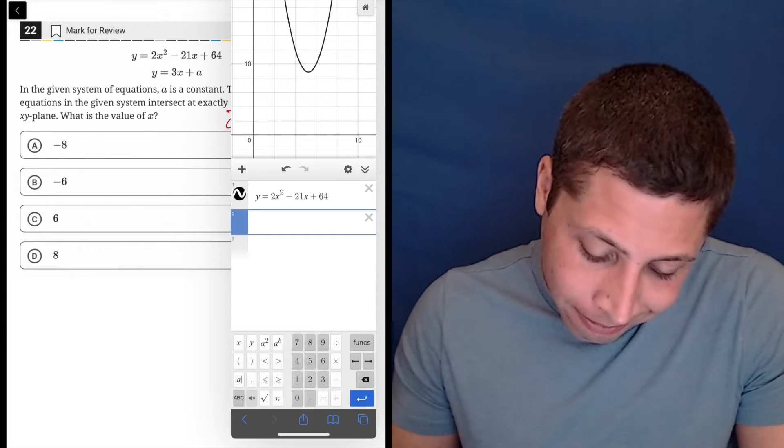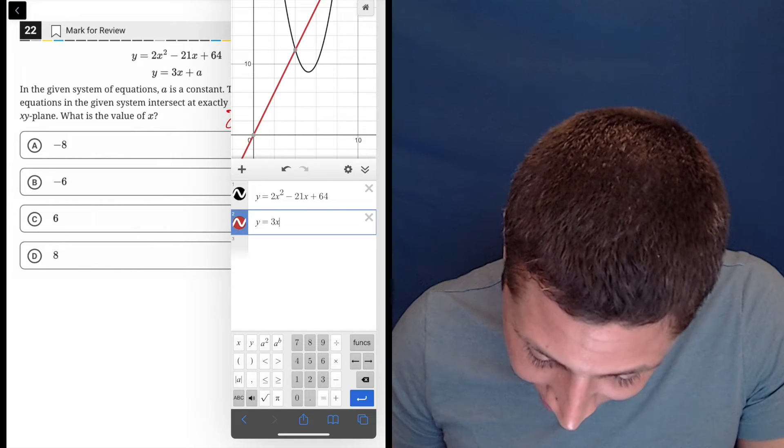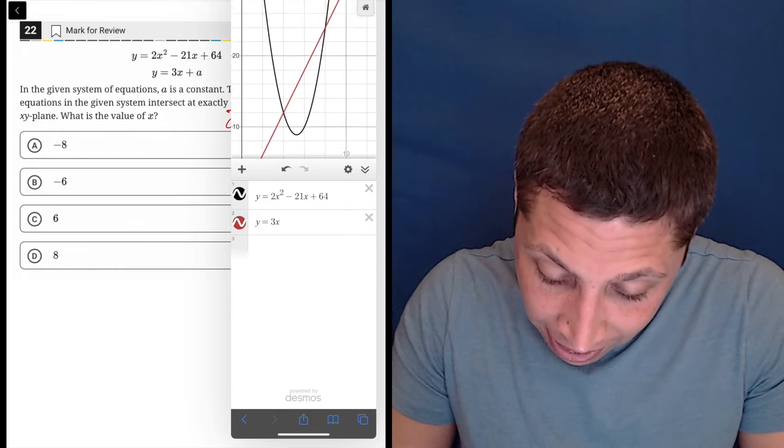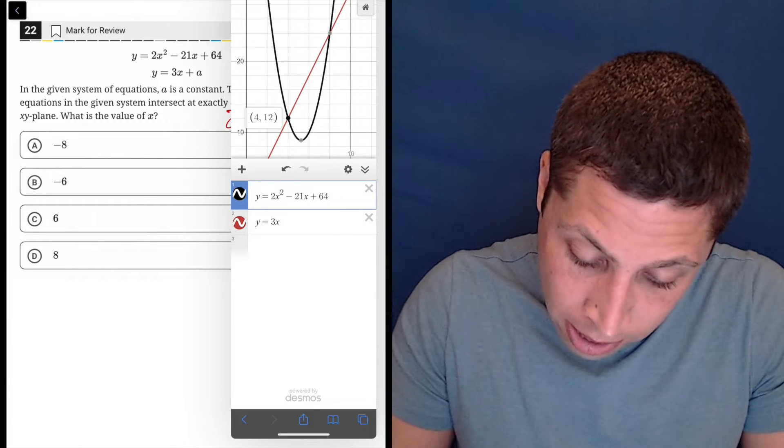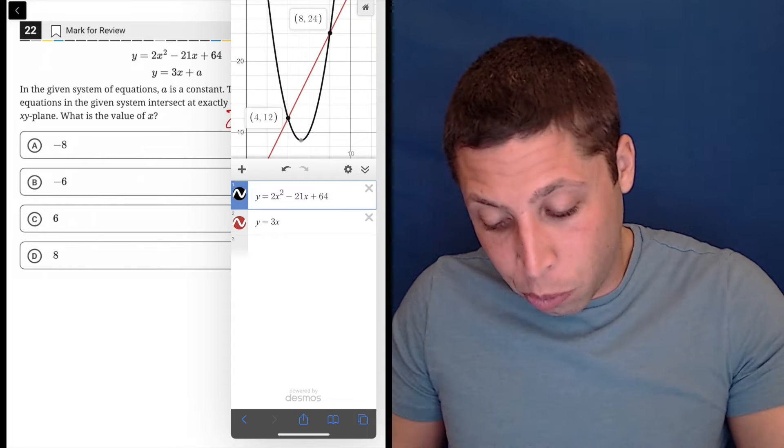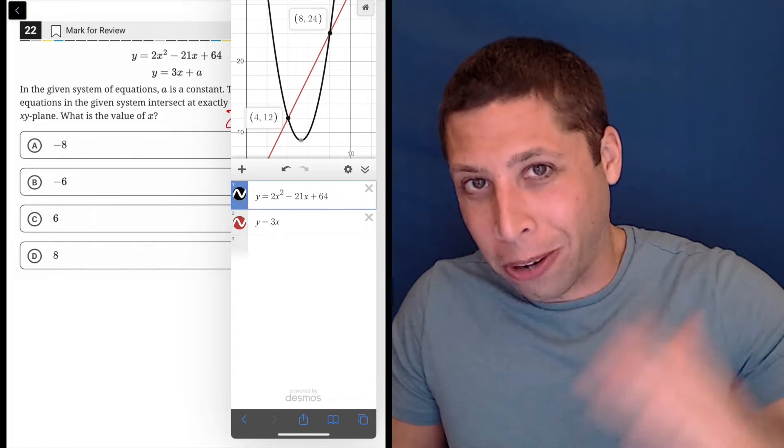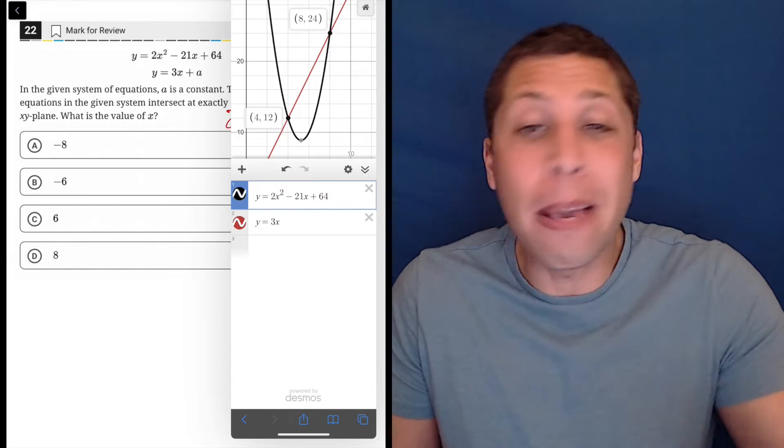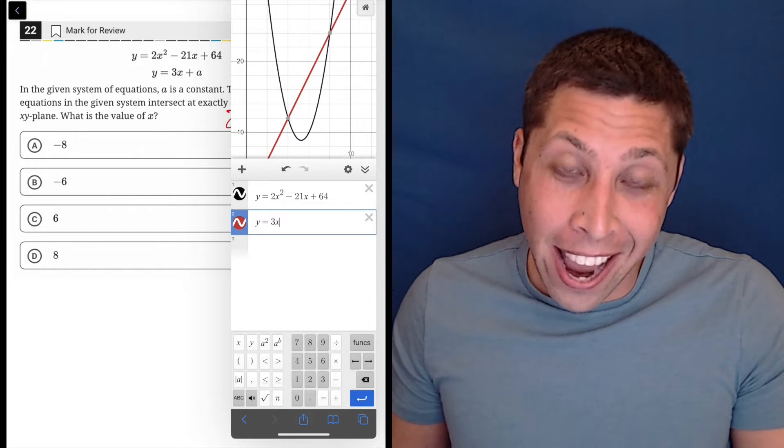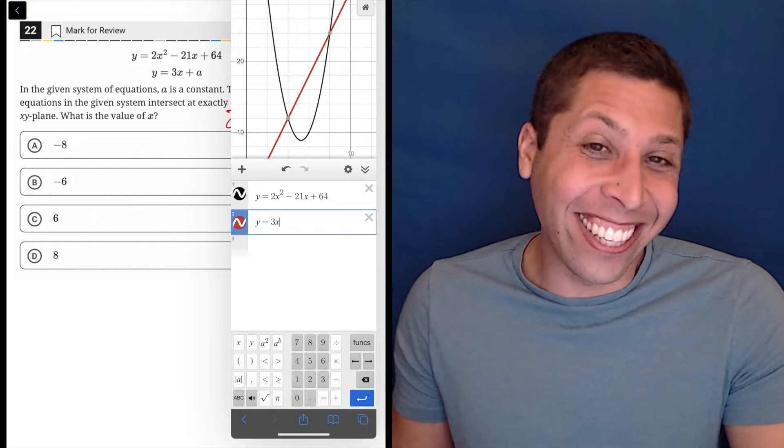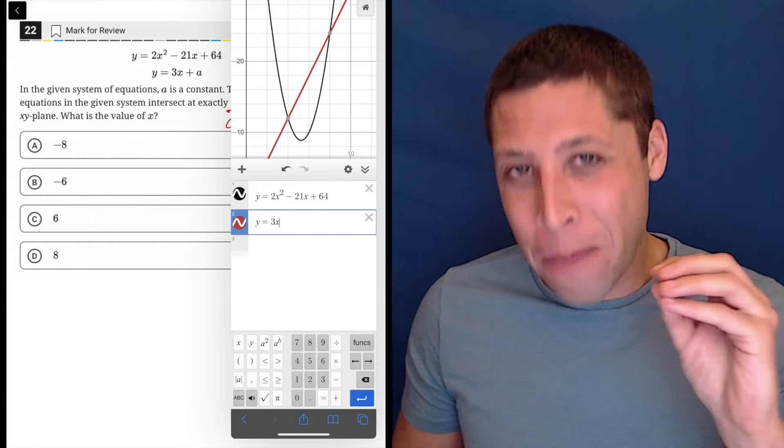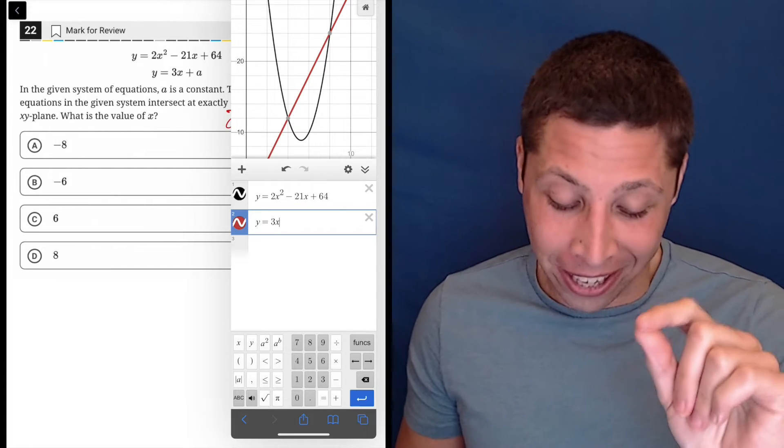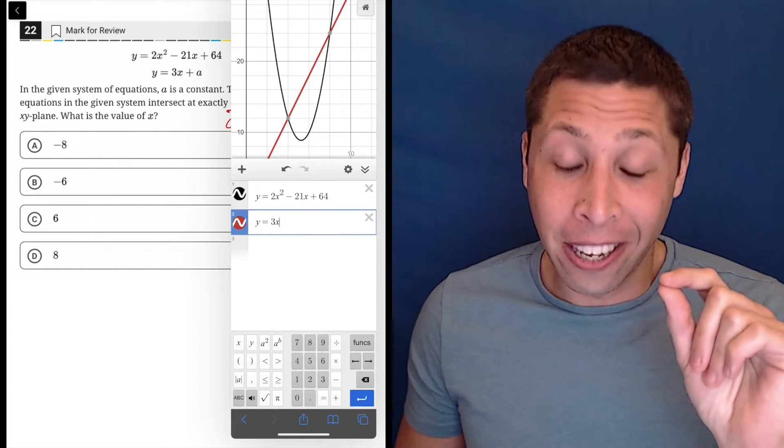3x is our slope. This is a slanty line, but I don't know. Let's graph it. Let's just see, right? So y equals 3x. Now without an a, if a were zero, we can see that this has two intersections, right? It's hitting it here, one and two. So basically what we want to do is we want to see if we can lower it and get it to hit just once, okay? So I might be like, well, let me see if maybe I can guess and check for a. Maybe I'll get really lucky and a will be something nice.